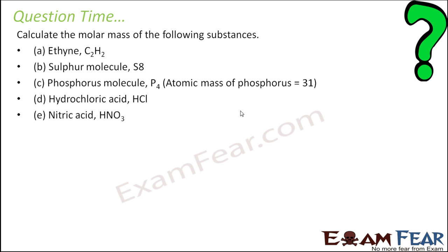We have to find the molar mass of these compounds. C2H2, 2 carbon, 2 hydrogen. 2 carbon is 2 into 12, 2 hydrogen is 2 into 1, that is 26 grams. Sulfur 8, S8, so 8 into 32, that is 256 grams.